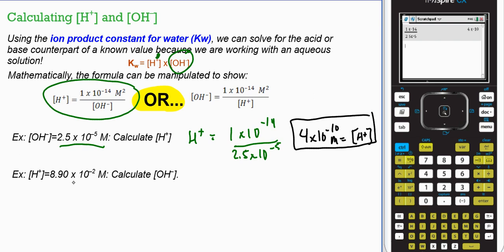That's a molar value. So let's look at the next one. Hydrogen ion concentration is 8.9 times 10 negative 2. Calculate hydroxide concentration. So in the hydroxide concentration, we're just going to do 1 times 10 negative 14 divided by the known hydrogen ion concentration, 8.9 times 10 negative 2.